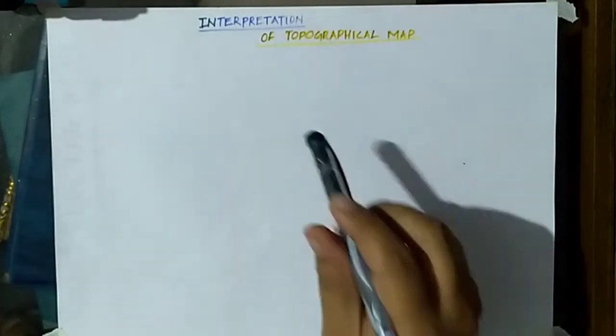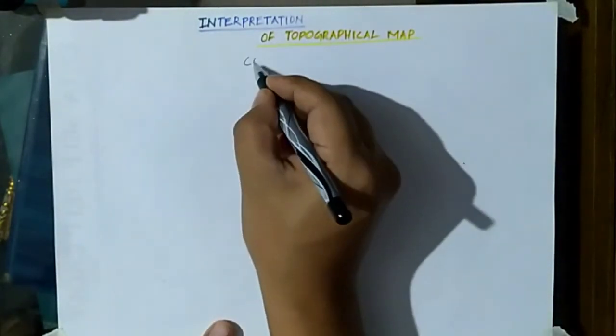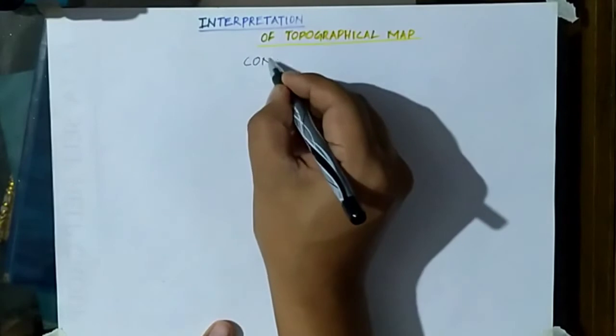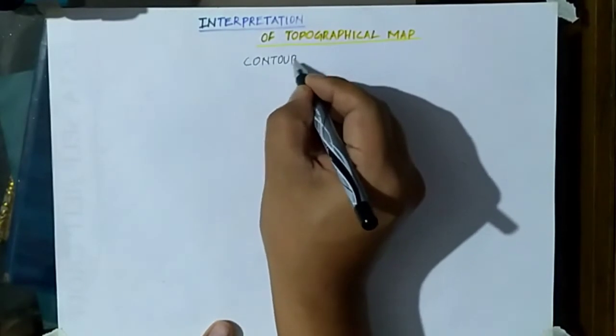Hello everyone, students. Welcome to my YouTube channel. This is the second video on the chapter interpretation of topographical maps. The topic we are going to discuss in this video today is contour lines.